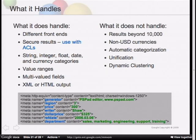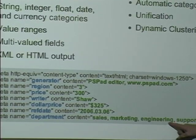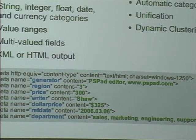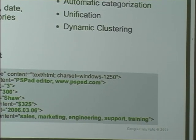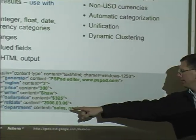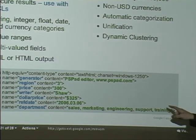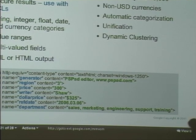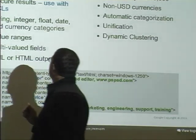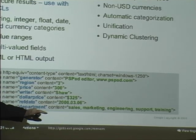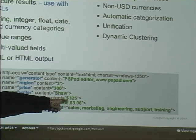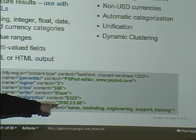We support range values and multi-valued fields. So if you have metadata with more than one value in it — in this case the department field has five different values for one search result — we will add counts to each of those different categories. If you select any one of them, like sales, marketing, or dynamic navigation, it will still show up on the list. Value ranges apply for integer-based amounts and dollar-based currency, and you can also do range-based searching on dates.